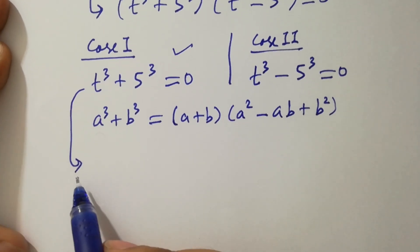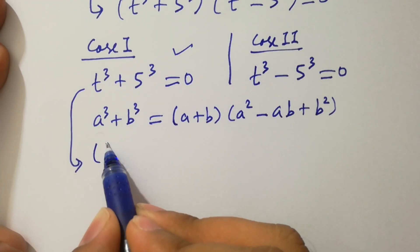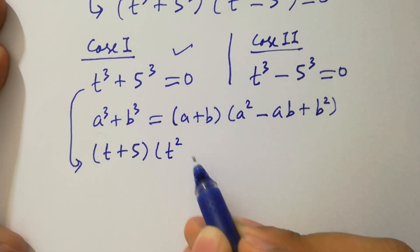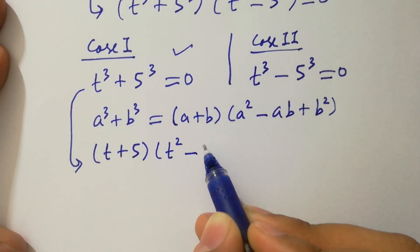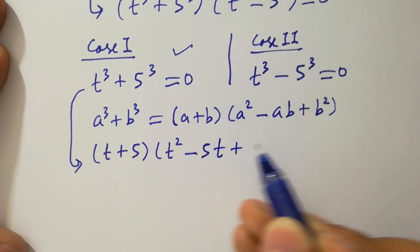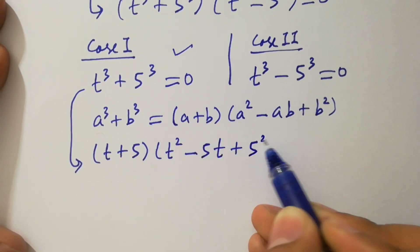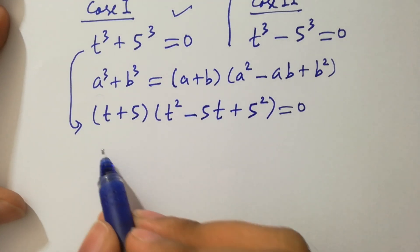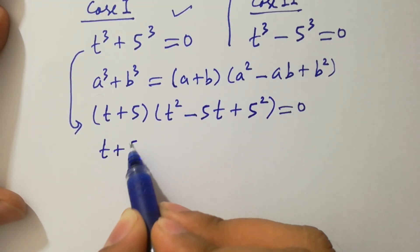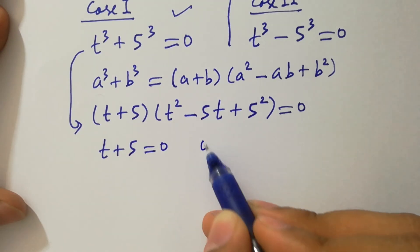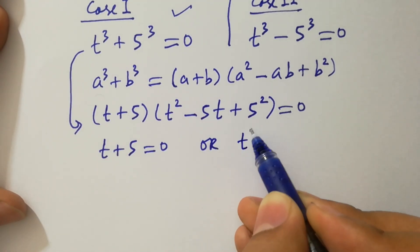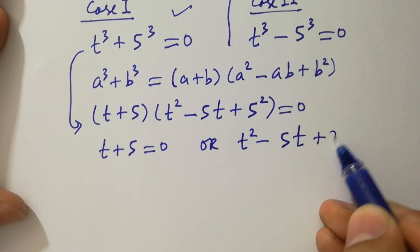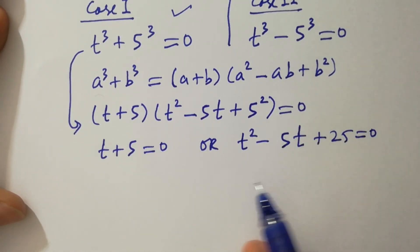Applying the formula, it will be t plus 5 times t squared minus 5t plus 25 equal to 0. Either t plus 5 equal to 0, or t squared minus 5t plus 25 equal to 0.